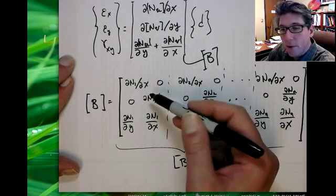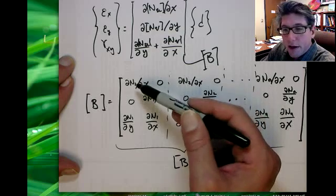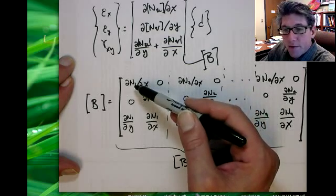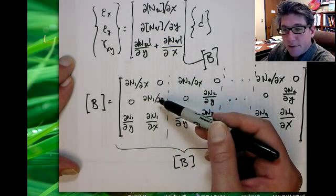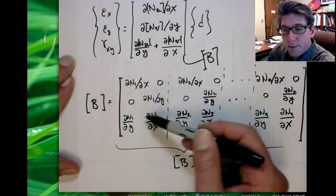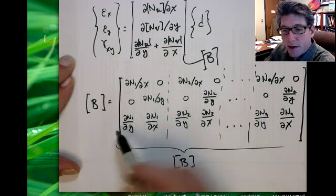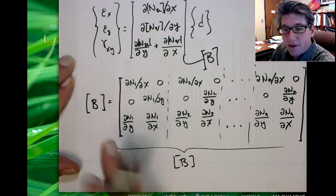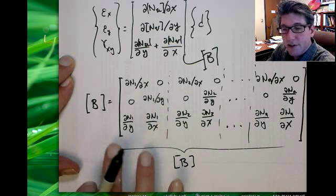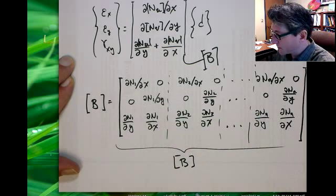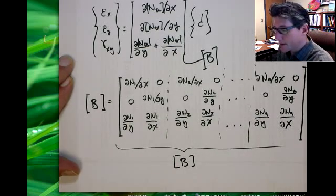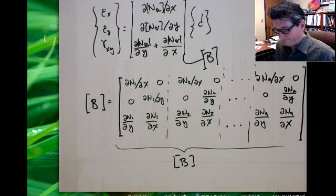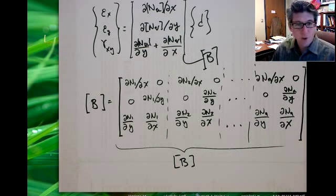They all have this same form: partial derivative with respect to x, partial derivative with respect to y, and then both in the bottom row — with this mixed nature because they're the shear strains. And that's it. Hope that's a little clearer.